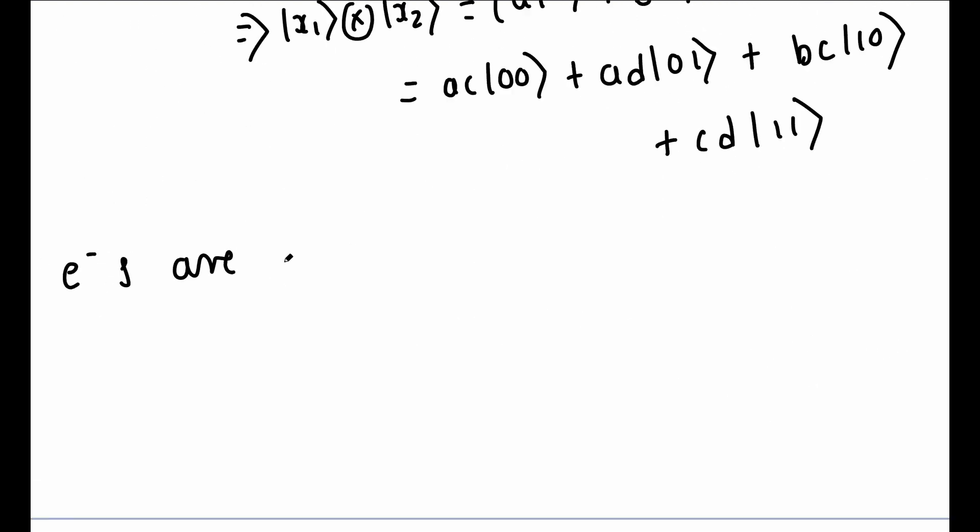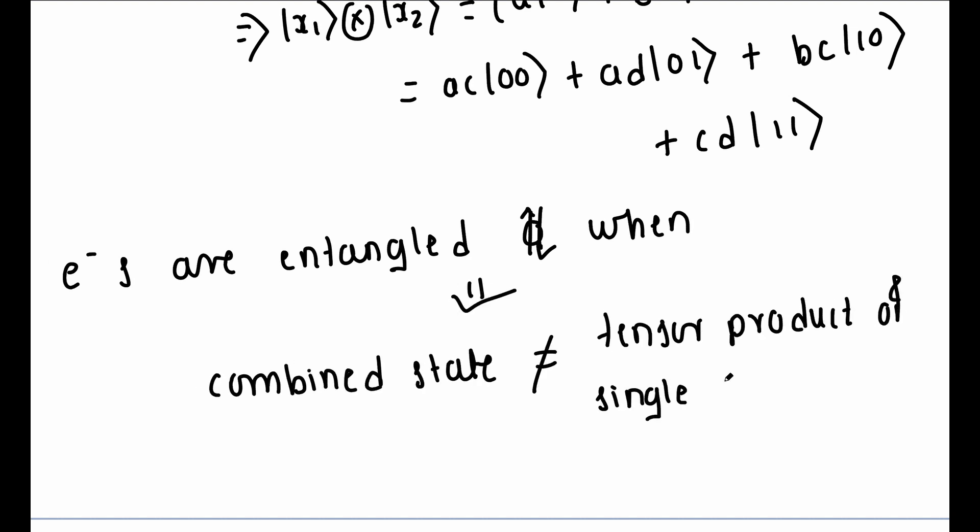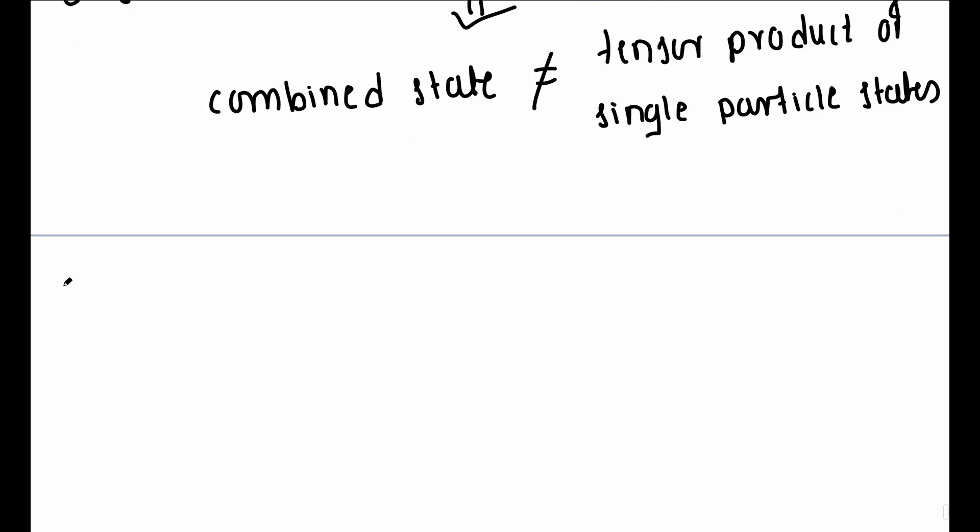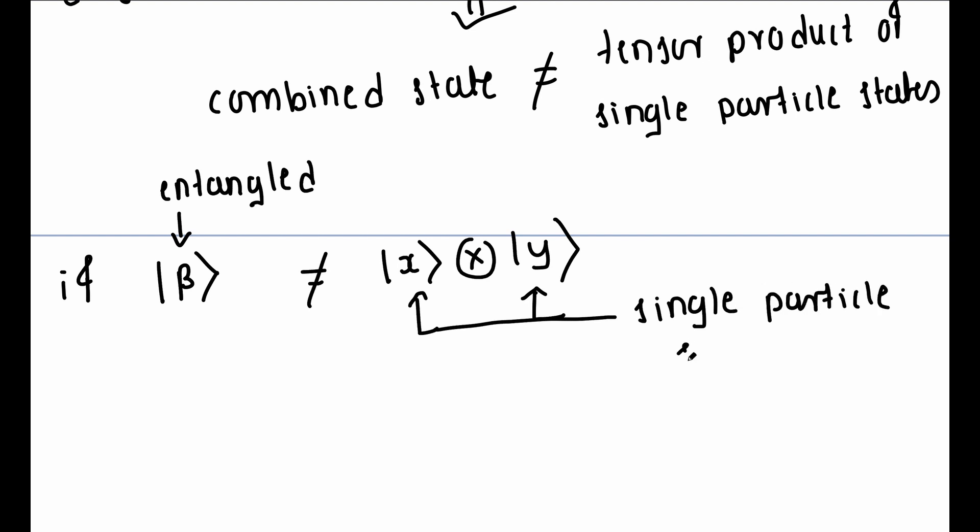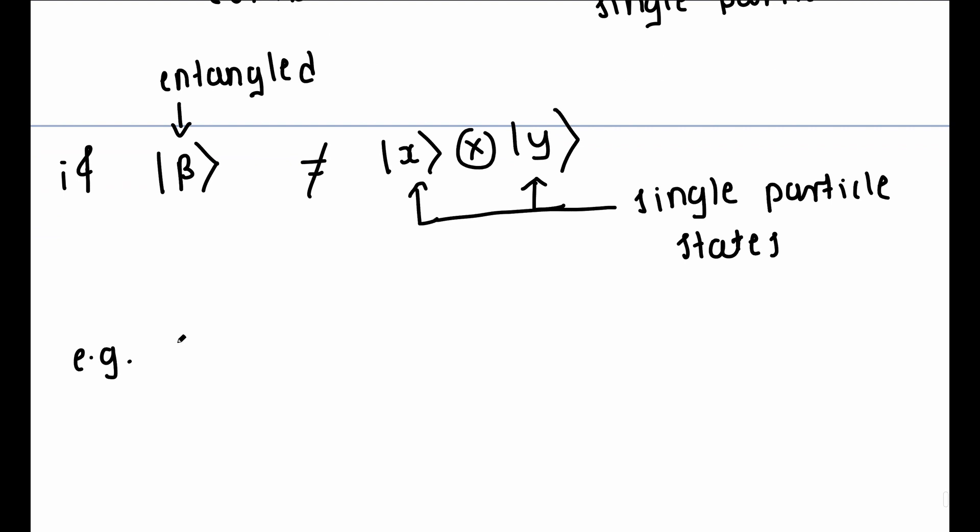We say that the two electrons are entangled when the combined states of these electrons cannot be written as a tensor product of single particle states. So, if beta is an entangled state, then ket beta is not equal to ket x into ket y, where ket x and ket y are single particle states. An example of an entangled state is ket beta 00, which is equal to 1 by root 2 ket 00 plus 1 by root 2 ket 11.